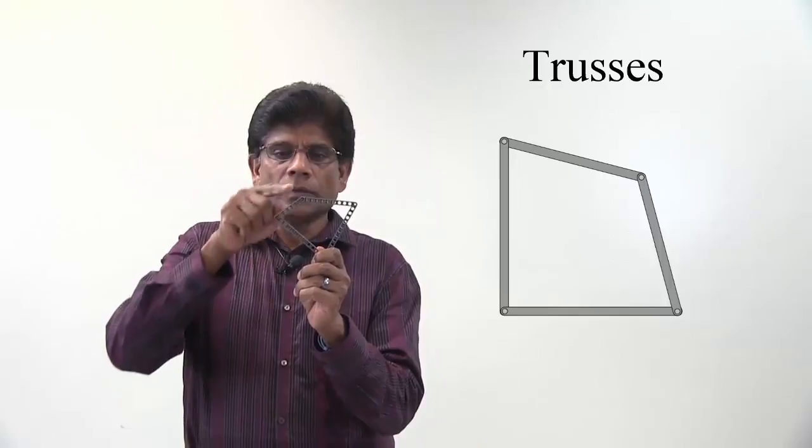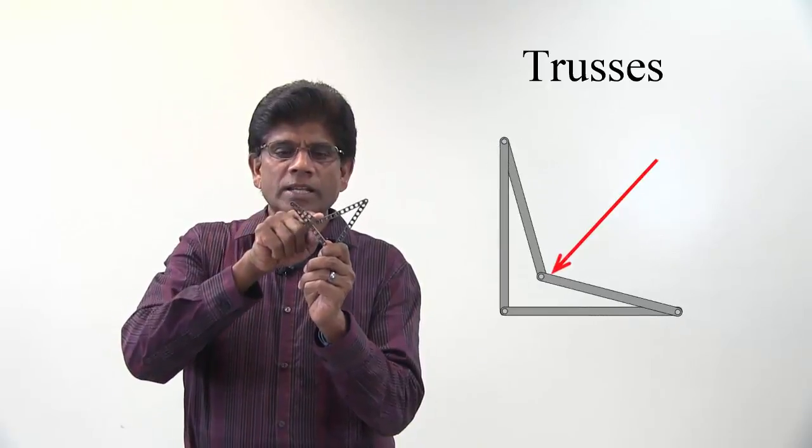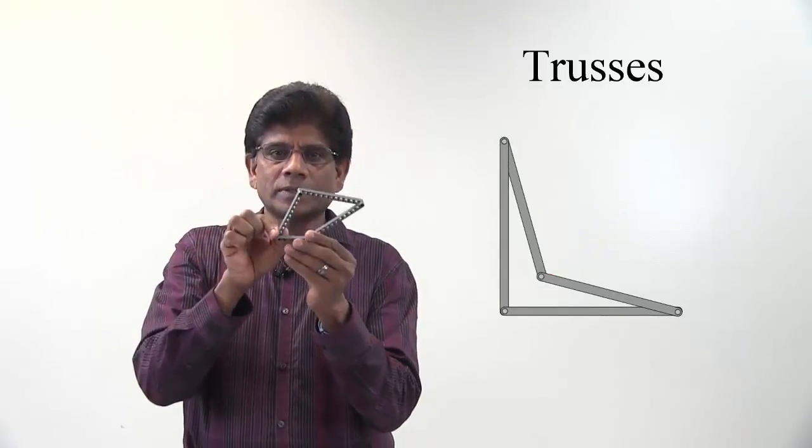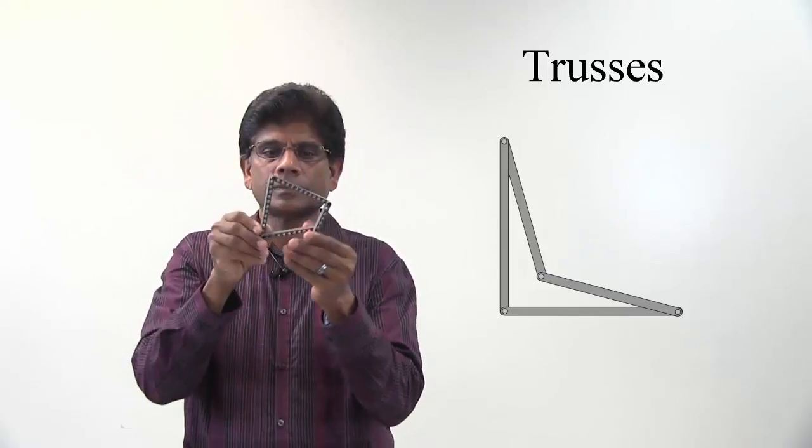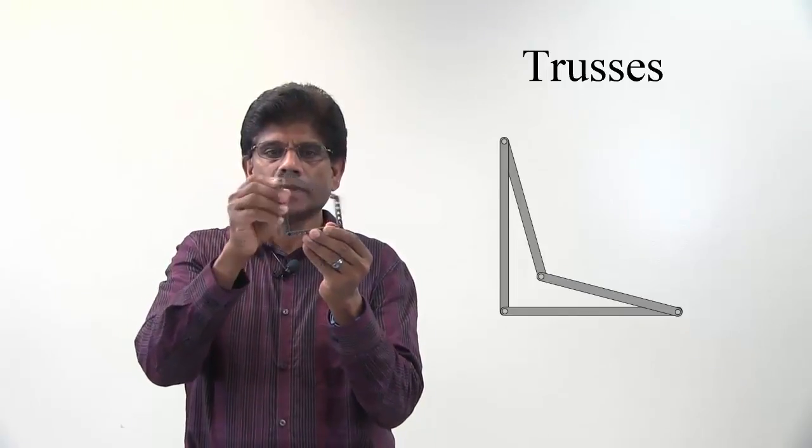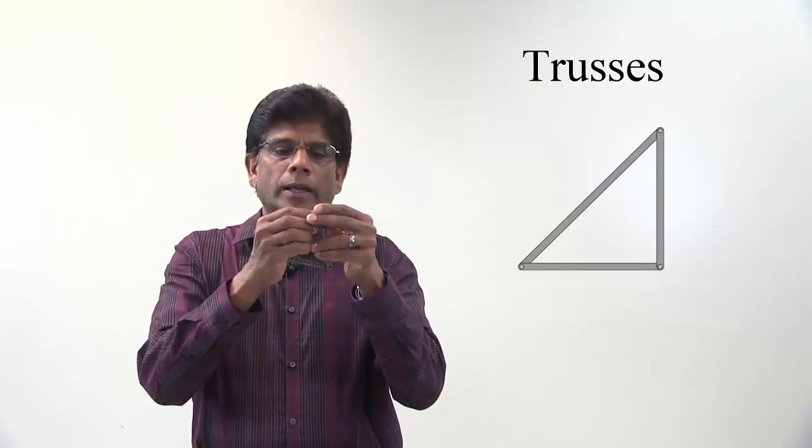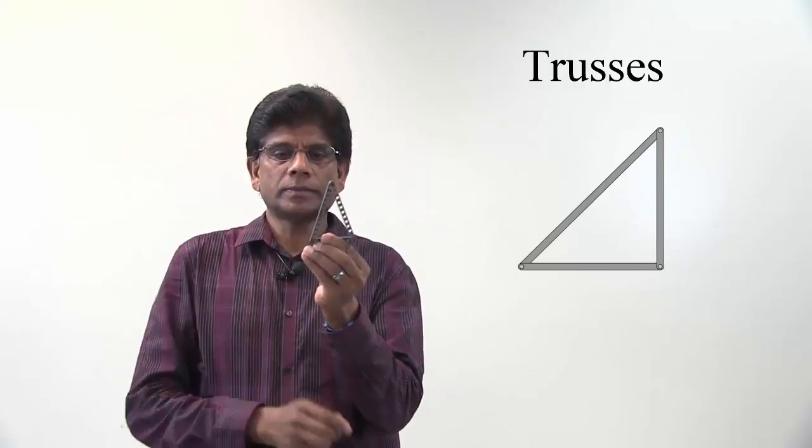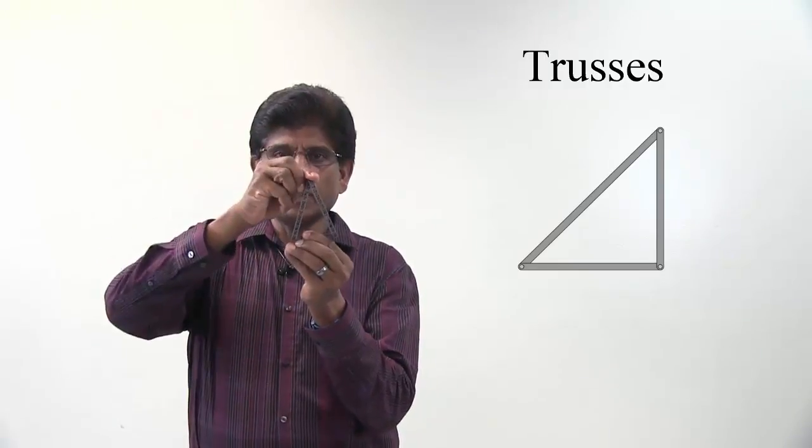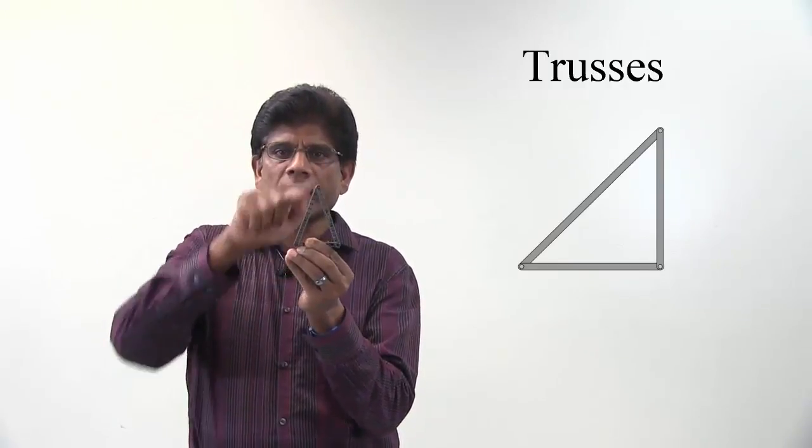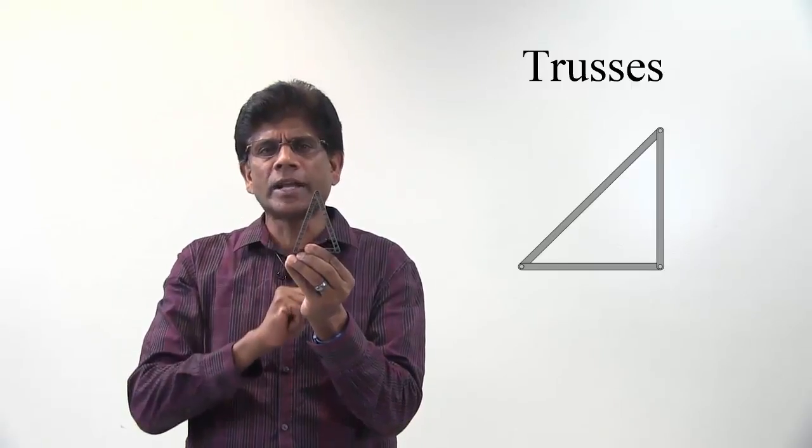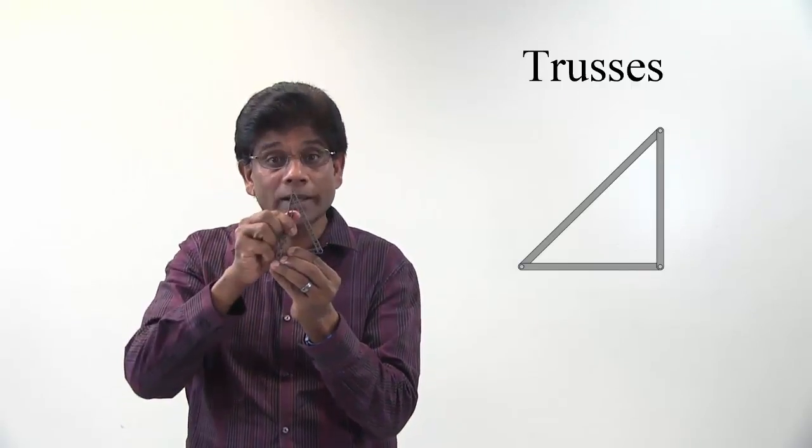And this structure, when I apply a load, is not stable. It collapses. Not stable. Now take a look at this structure made of three members. And this forms a triangle. This structure is stable and rigid. The triangle geometry is inherently rigid and will stay together unless you break it.